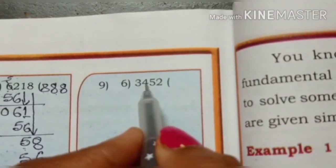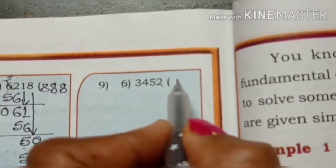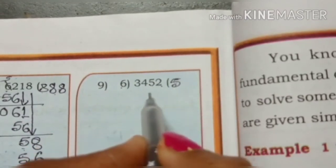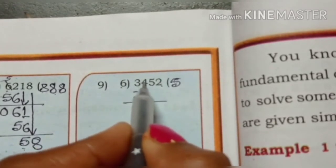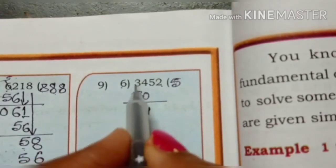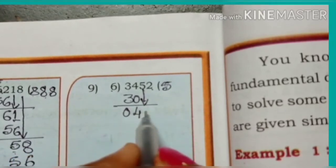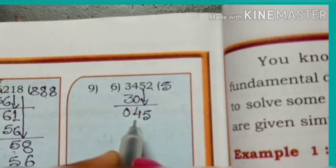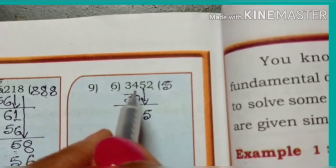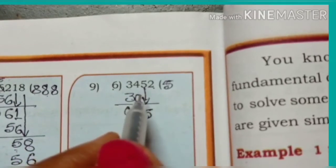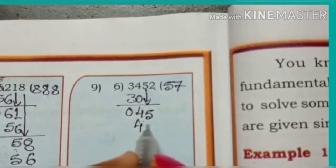9th question: 3452 divided by 6. 6 fives are 30. Quotient digit is 5. Write 30 here. 4 minus 0 is 4, 3 minus 3 is 0. Bring down 5. Divide 45 by 6 — 7 times. 6 sevens are 42.